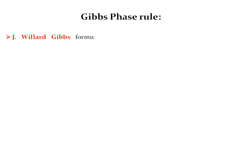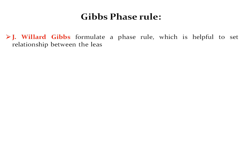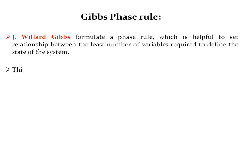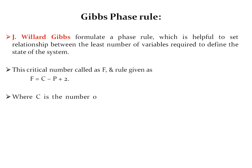Now, you are familiar with these different terms. We will move towards the Gibbs phase rule. Willard Gibbs formulated a phase rule which gives the relationship between the least number of variables required to define the state of the system. This critical number is called F and the rule is given as F = C − P + 2, where C is the number of components and P is the number of phases present in your system.